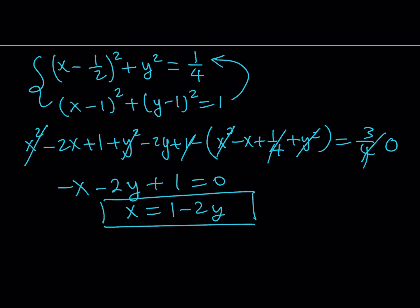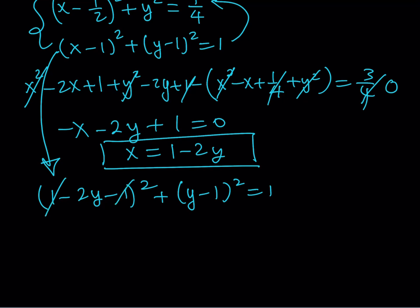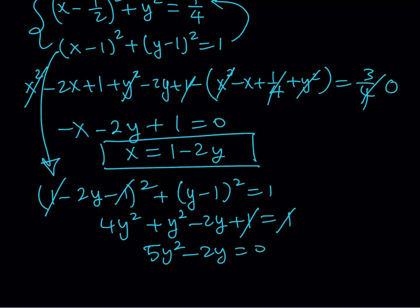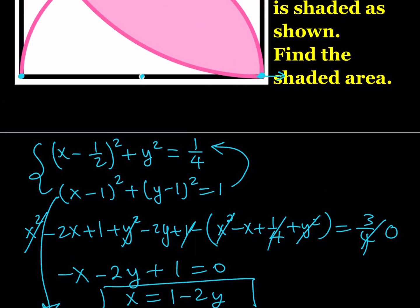We substitute x = 1 − 2y into the second equation: (1 − 2y − 1)² + (y − 1)² = 1. Simplifying: (−2y)² = 4y², plus y² − 2y + 1 equals 1. The ones cancel, and combining like terms gives 5y² − 2y = 0. Factoring out y: y(5y − 2) = 0, so y = 0 or y = 2/5.